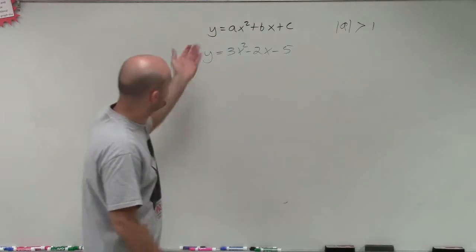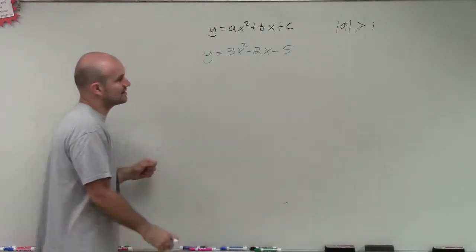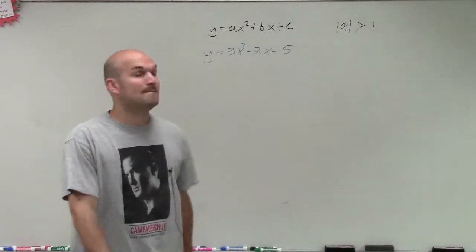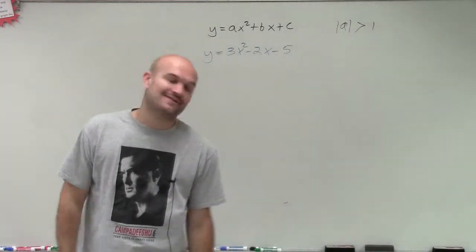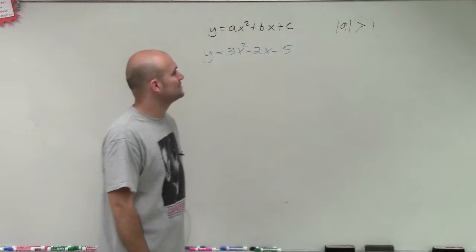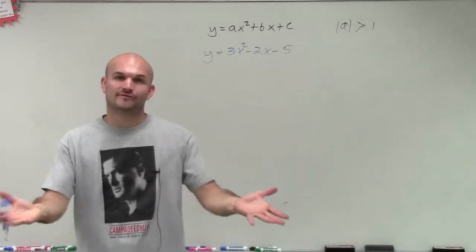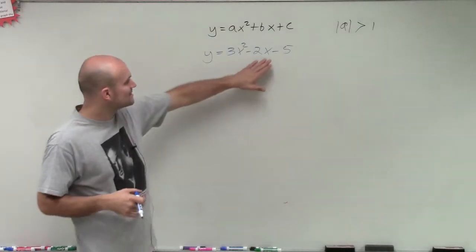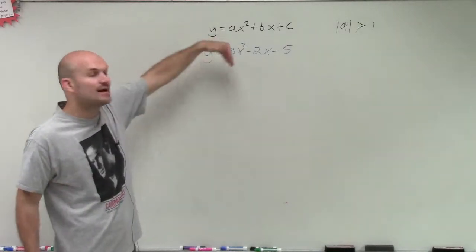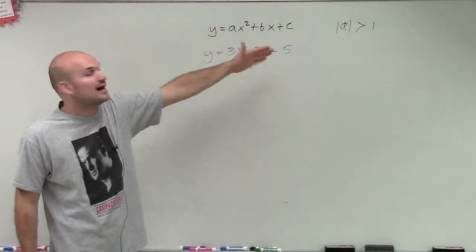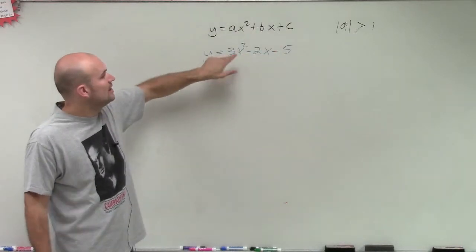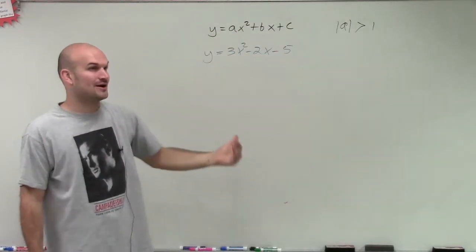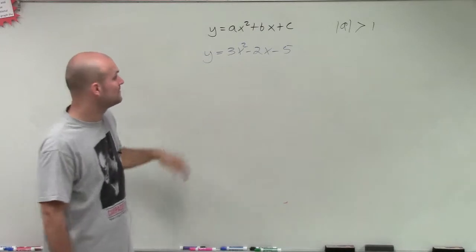Welcome! So what I have here is y equals 3x squared minus 2x minus 5. What we're going to do is show you how to solve this by factoring. Now when looking at a problem like this, we always want to see if we can factor out a common factor, especially to get our a equals 1, because factoring is a lot easier when our a is equal to 1.